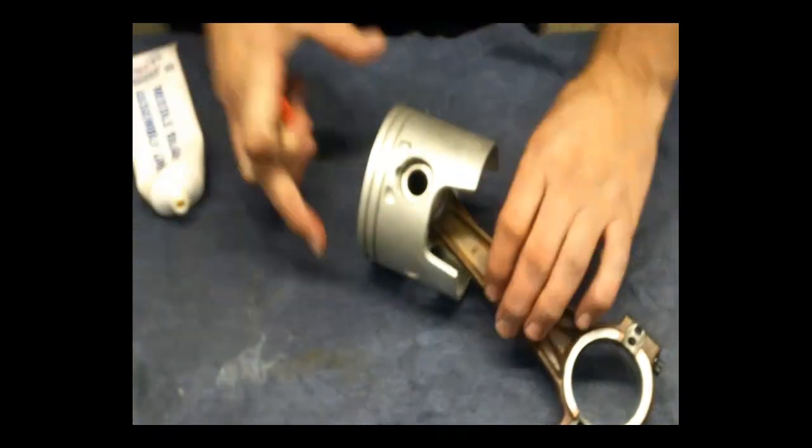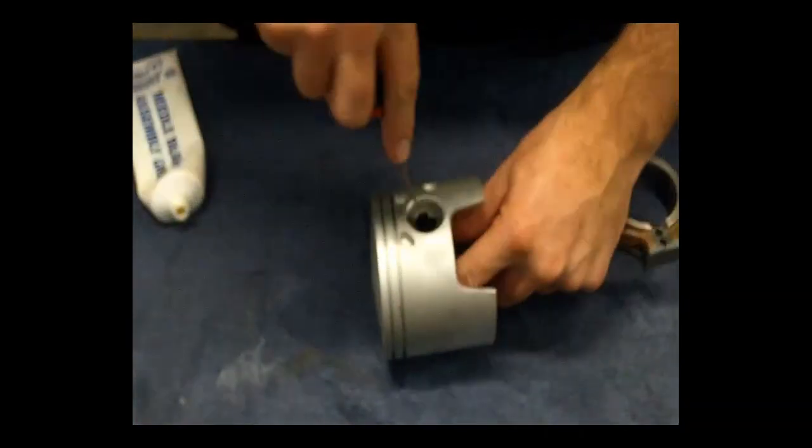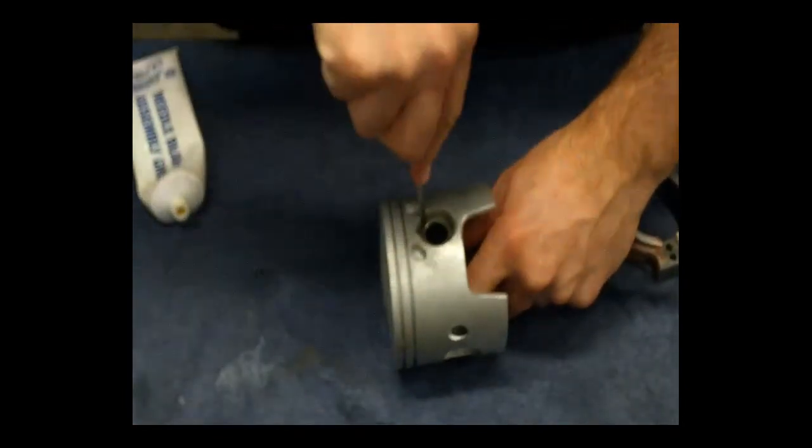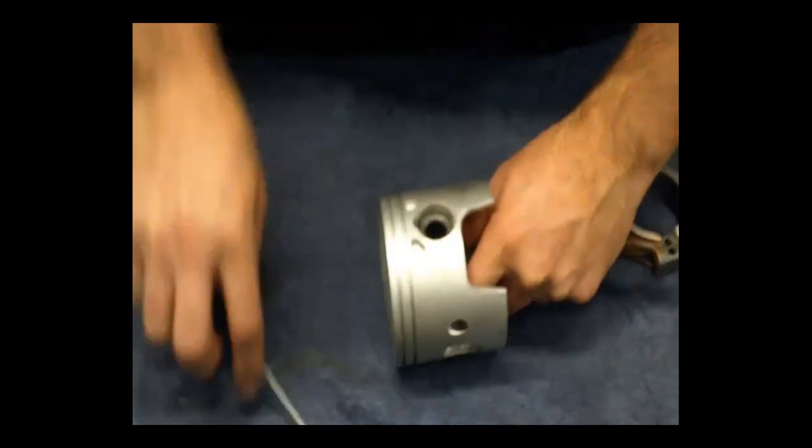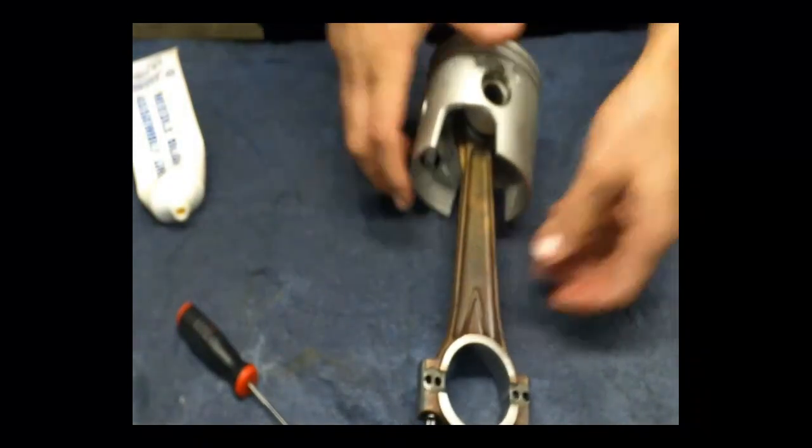Now what I do is I turn the piston over and push down on the wrist pin. Make sure that the clip has seated properly. And then turn it over and do the same. You should push firmly both directions to make sure that the clip doesn't come out. And there you go. It's ready for the rings and to be installed into the engine.